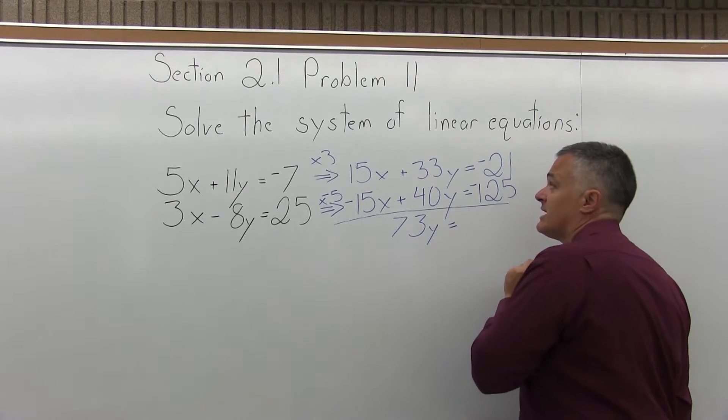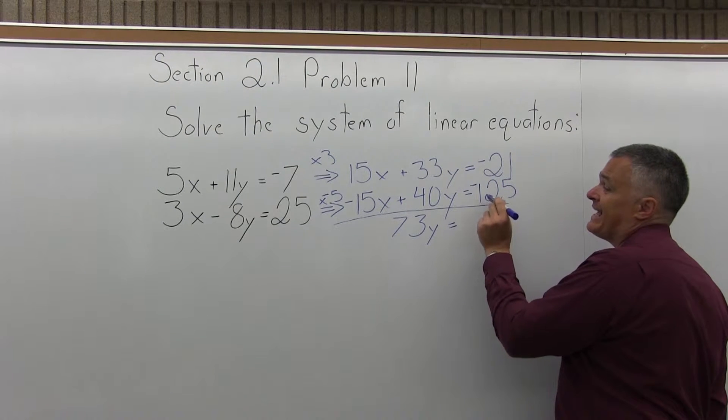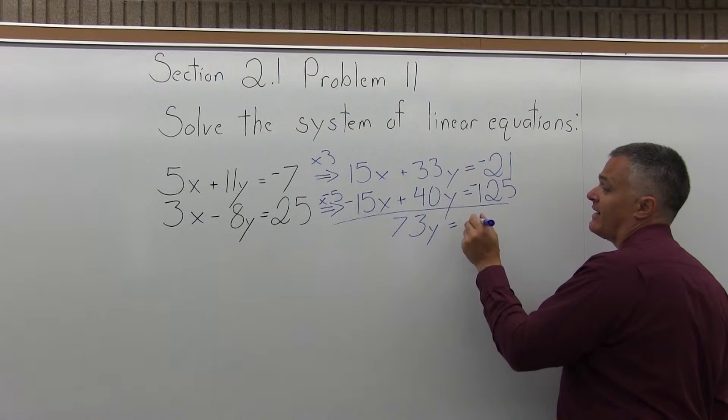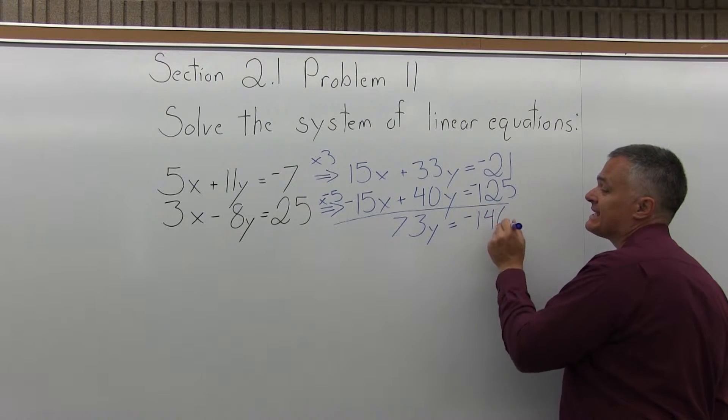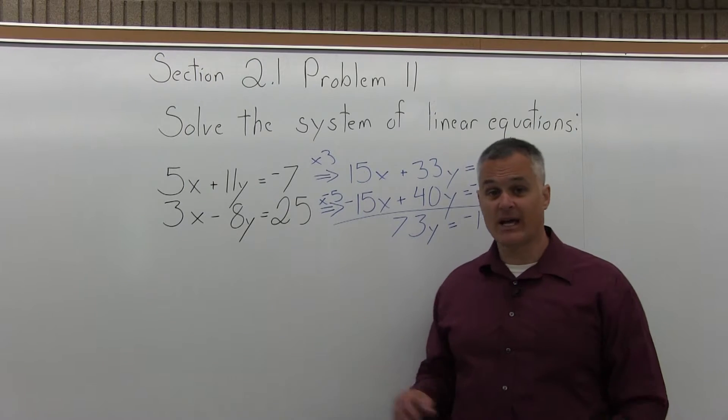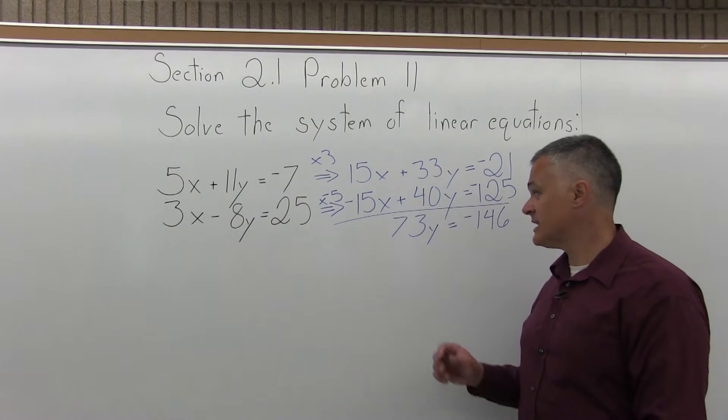33y plus 40y will make a positive 73y. And on the right side of the equals, I have negative 21 and negative 125. That'll be negative 146. So that's step 2. I added the equations together and one of my variables canceled.